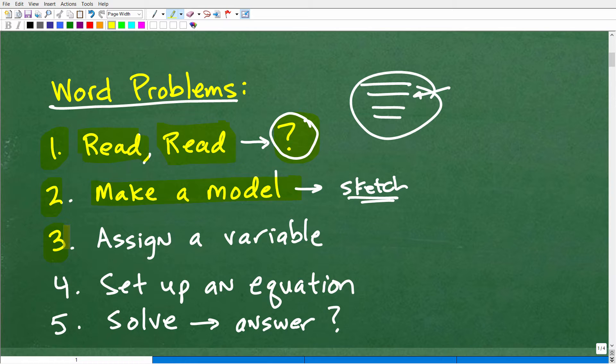Now, the third thing you want to do is, especially if you're, we're using algebra is we need to assign a variable. Okay. So, you know, we're going to be using like variables like X. So we might want to say, look, we're going to say, well, we're going to let X equals what? Well, when we assign a variable, typically you're going to let that variable equal the unknown. Okay. Now, what is the unknown? Well, the unknown is typically the thing that we're trying to figure out, i.e. the question. Okay. So that's kind of how you kind of figure out what your variable should be.